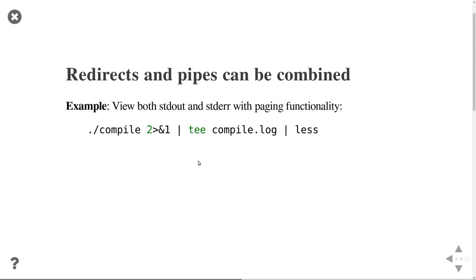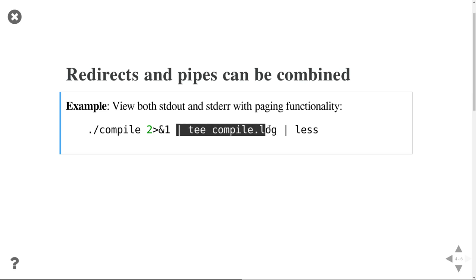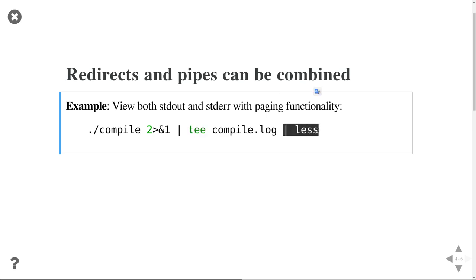You can now combine redirects and pipes. If you have a compilation step and want to keep track of both normal output and potential errors, you run compile and redirect standard error (2) into standard output, so everything comes out of standard output. Then pass that through the tee command to keep a log file, and finally pass through less so you can scroll through it on screen.